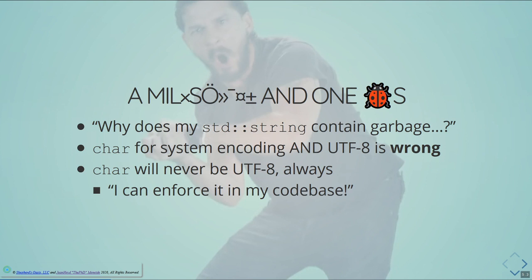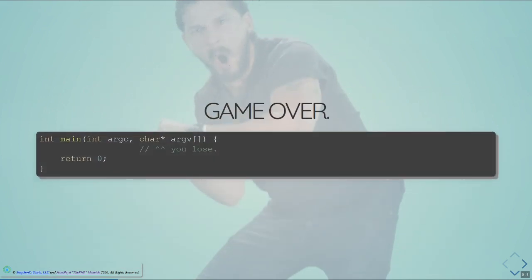Somebody's going to port some software, do some thing, and they're not going to be thinking about UTF-8 or whatever else. They're just going to be using strings, and that code is going to be wrong on that environment. You have to go with the assumption that char will never be UTF-8 always. We hear from people in the committee who say they can enforce it in their pristine, beautiful codebase that they control completely. And then this happens. They always lose because they don't control the environment. Whether it's the char* argv, or the data that comes over the wire, or the C API that generates data from whatever locale-based encoding there is — you lose. The environment has been thoroughly poisoned by locale-based encodings, and there's really not much we can do about it.